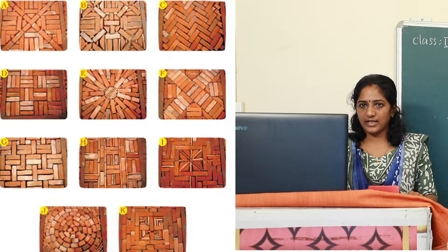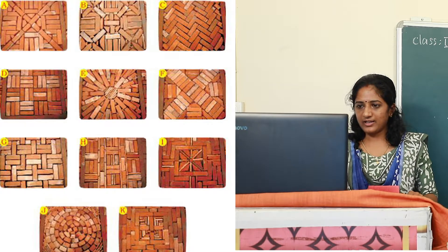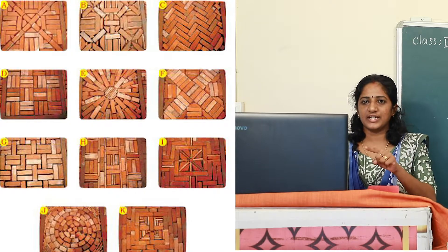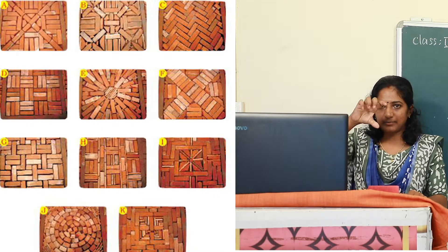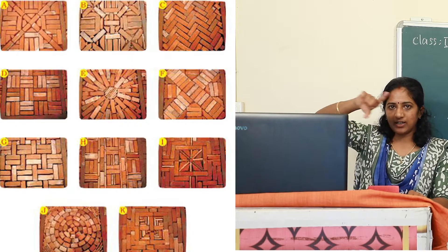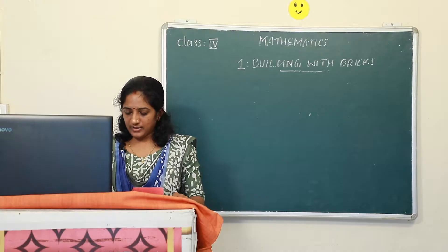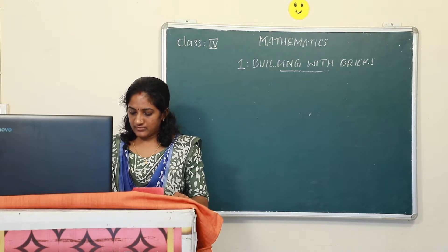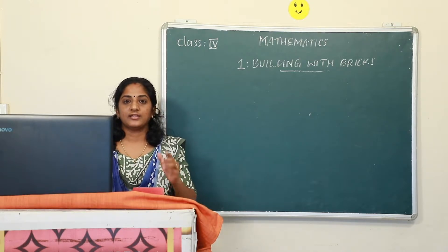Observe carefully: A, B, C, D, E, F, G, H, I, J. Yes — pattern J is made in a circle pattern. The bricks are arranged circularly. That is a circular pattern.